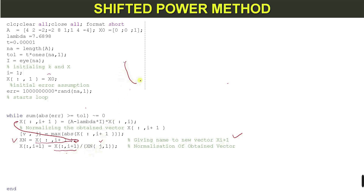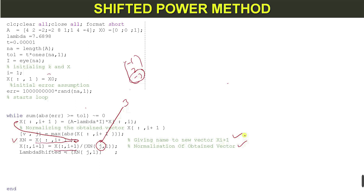So in the case of [-1, 2, -3], j is 3, meaning we divide by the third value. This completes the normalization of the obtained vector. Next, lambda shifted is again the largest value in the normalized vector.